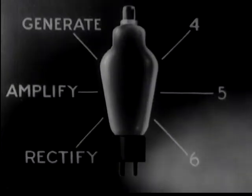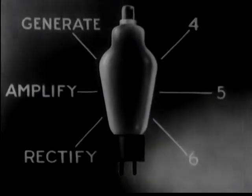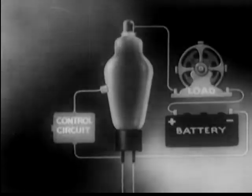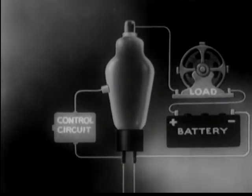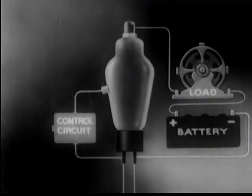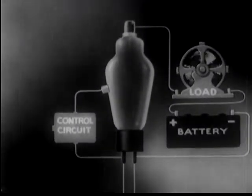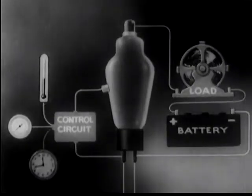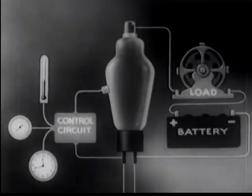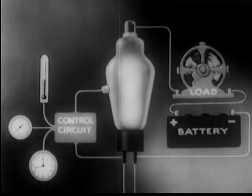We've now illustrated three of the basic ways that the electronic tube can be put to work: it rectifies, it amplifies, it generates. And here's a fourth thing it does — it controls. We use the grid here not to amplify a weak signal, but to control the flow of power to a machine. We connect the control circuit in such a way that it becomes a function of temperature, speed, time, or any other variable. As a result, grid potential is varied and the work circuit is automatically closed, modified, or opened.